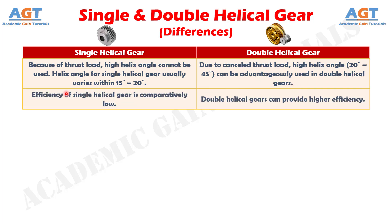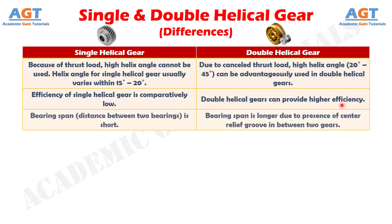Number 7: efficiency of single helical gear is comparatively low, whereas double helical gears can provide higher efficiency. Number 8: bearing span — the distance between two bearings — is short in single helical gears. Whereas, in double helical gears, bearing span is longer due to the presence of a center relief groove in between the two gears.